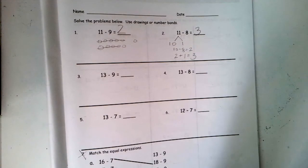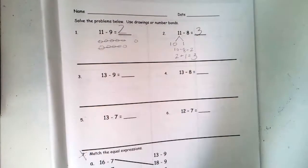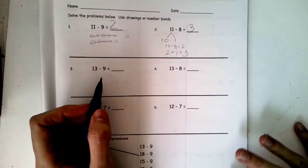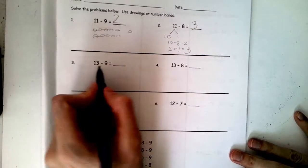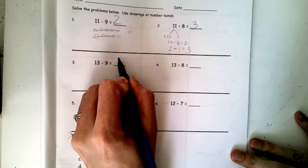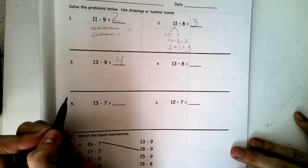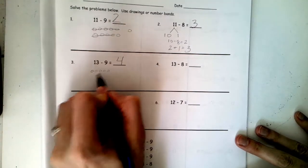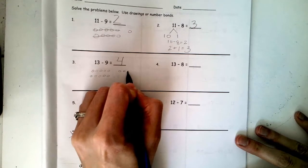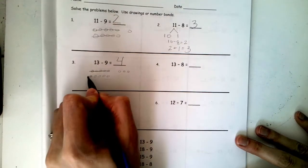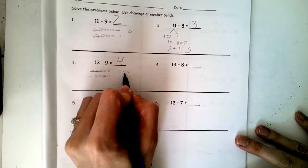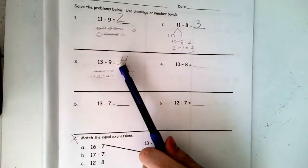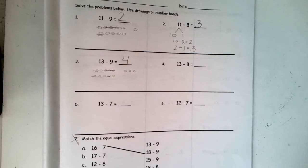Now if you hear my voice, I hope that means you have already finished number 3. If you have done number 3, for 13 take away 9, you should have the answer 4, whether you used a drawing or a number bond. 13 is 10 and 3 more, take away 9. I have 1, 2, 3, 4 left. Awesome! Give yourself a thumbs up if you got the answer 4. If you did not, maybe you can find what your mistake was and fix it.